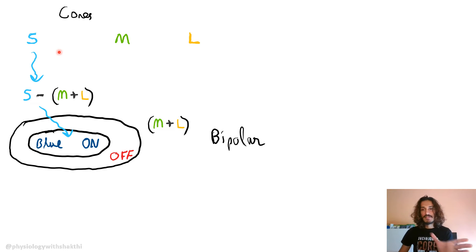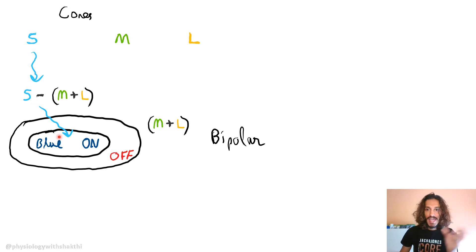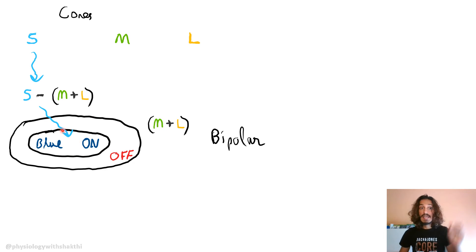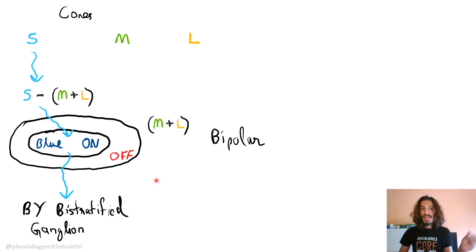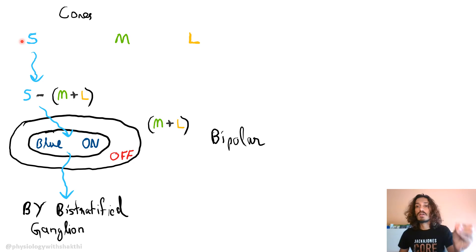The small wavelength cones contribute, and the difference between that and the luminance pathway from medium and long wavelength cones activates the blue-on center. If blue is not present, the off pathway is activated; if blue is present, the central on-cell is activated. This signal then goes to the blue-yellow bistratified ganglion cells, which are specific for taking signals from the blue-on center.